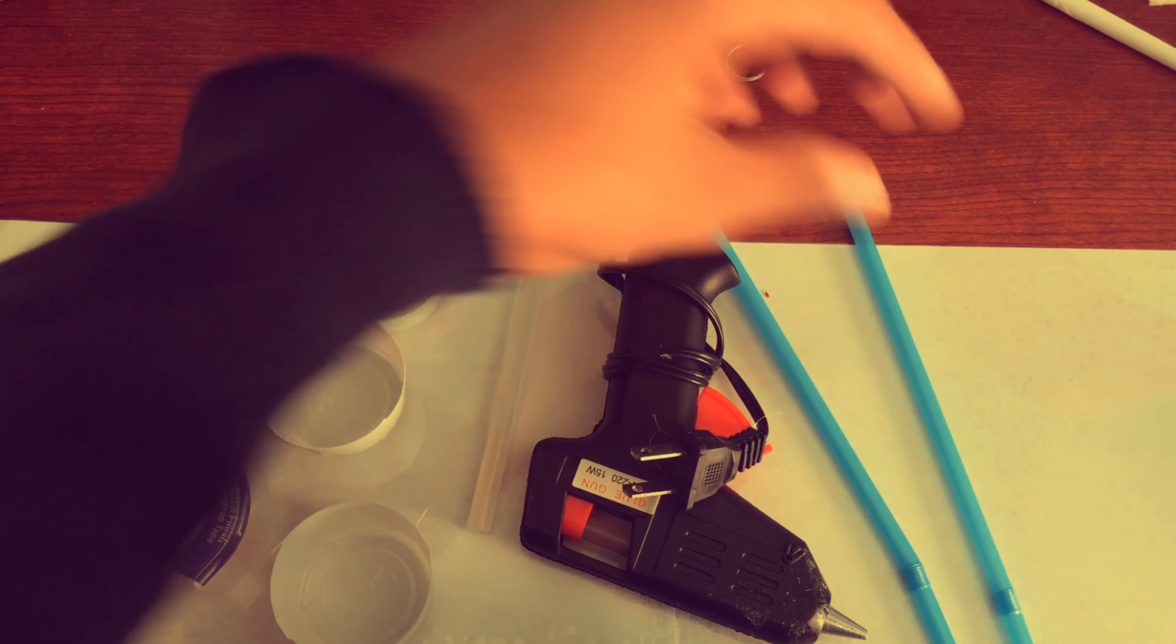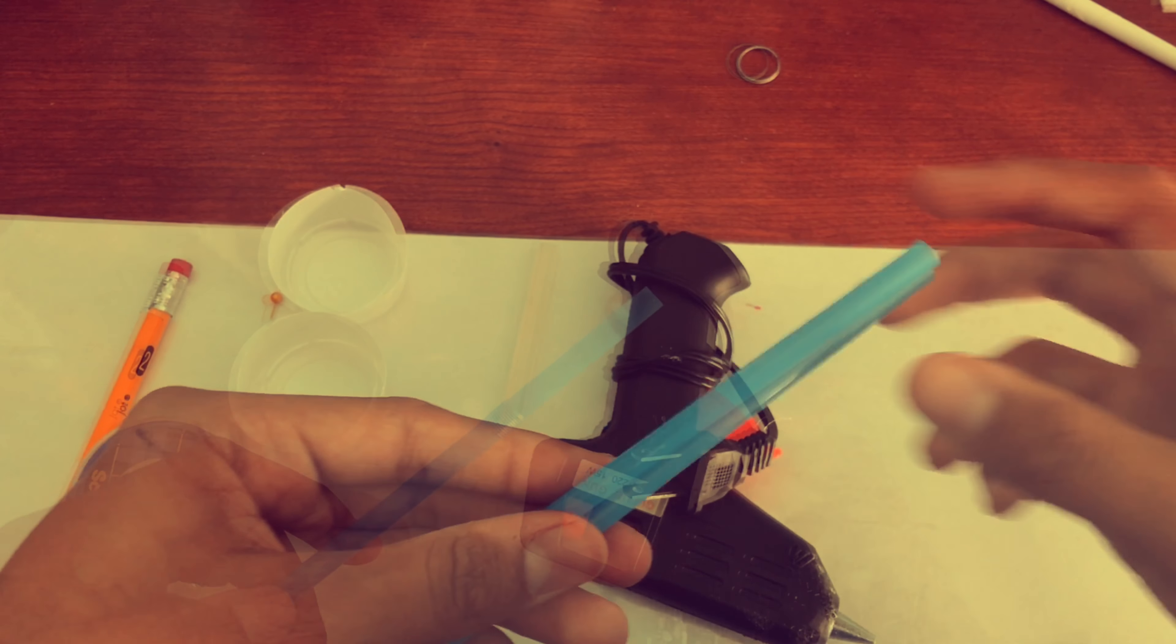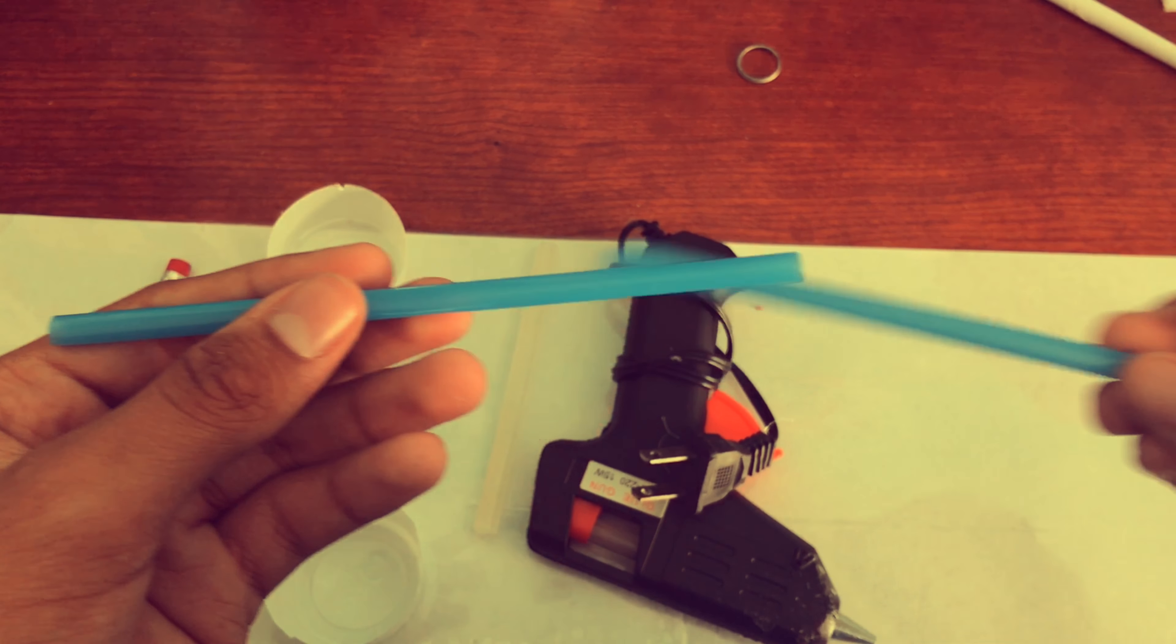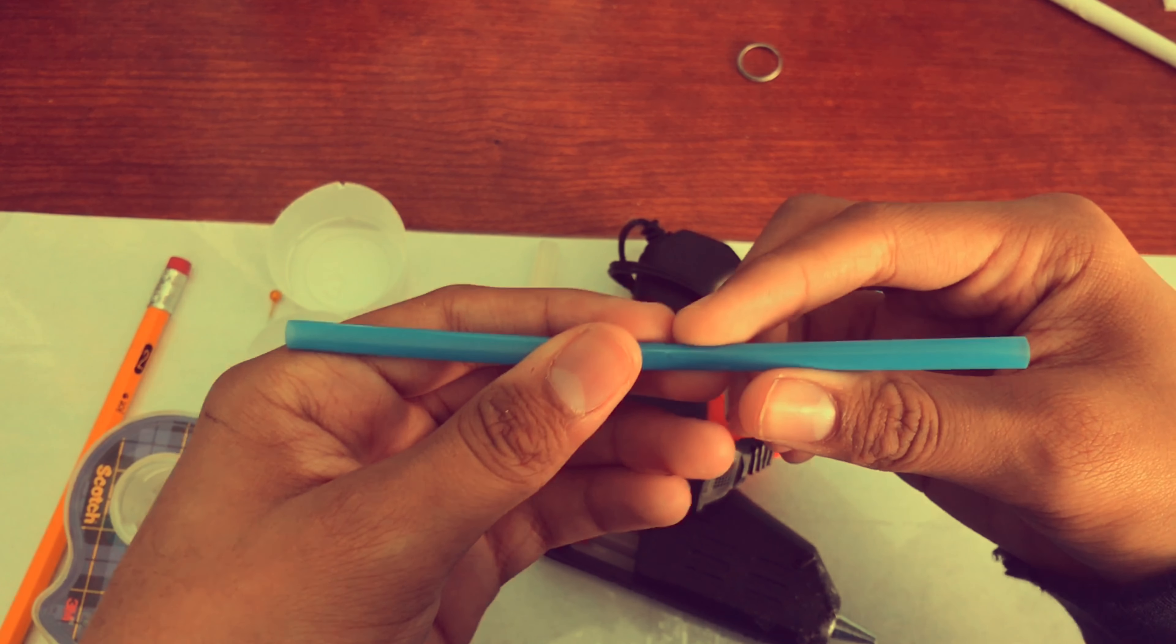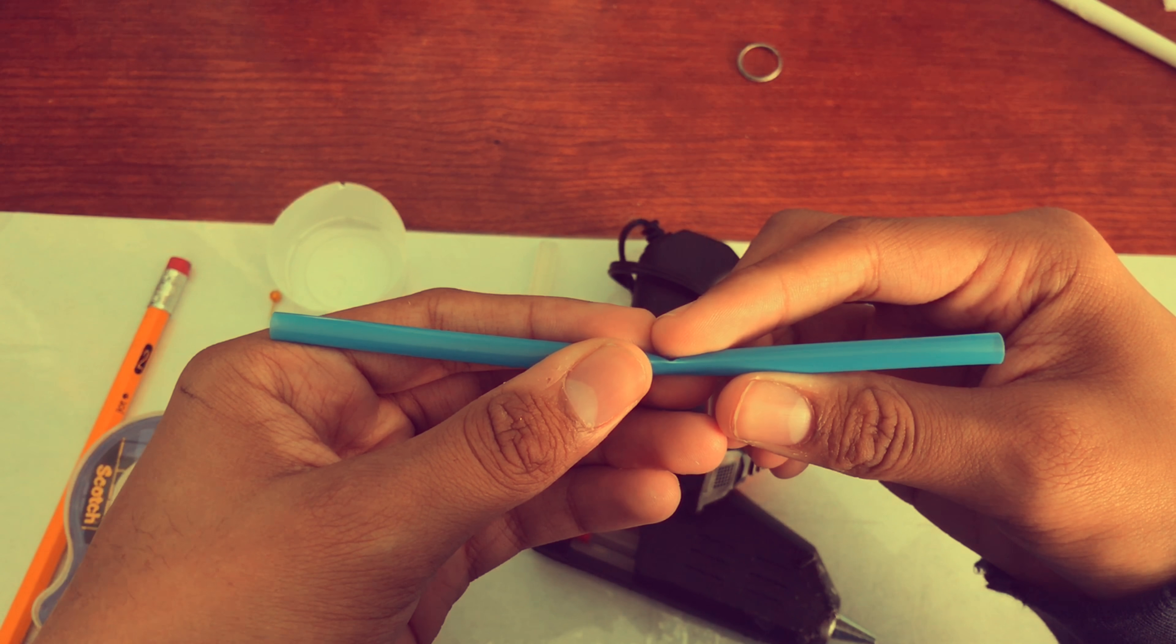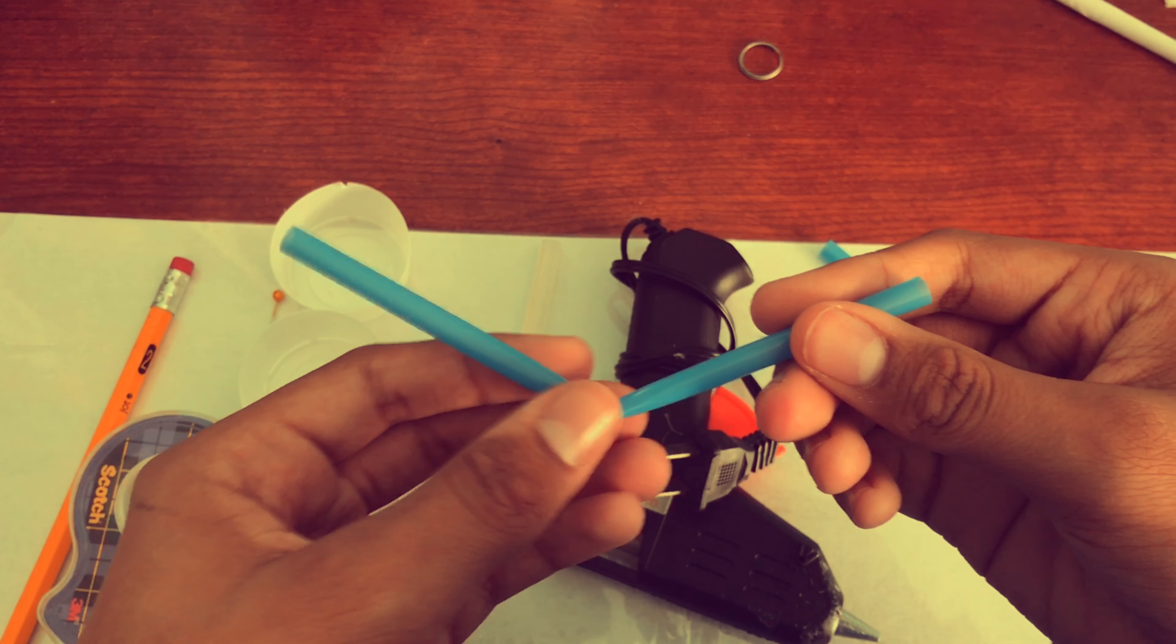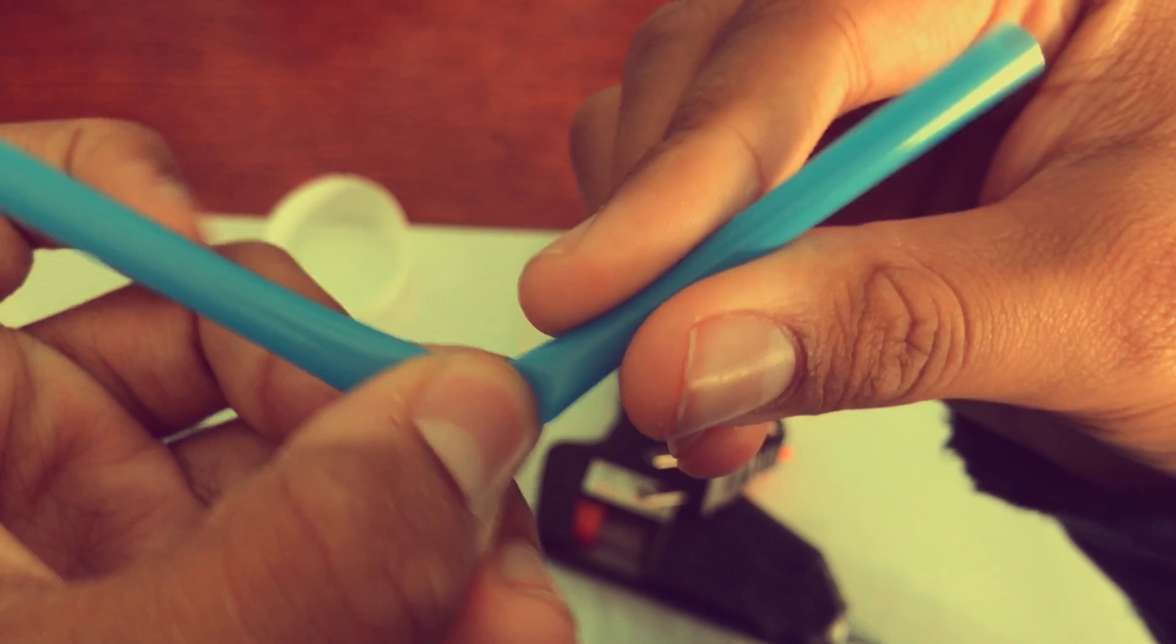So now what you're gonna do is you're gonna take your straws and you're basically gonna cut off the tops of each of them. Alright, so I got the tops of my straws cut off. So now what you're gonna do is you're gonna lay one of the straws down and then basically take one of your straws and basically bend it in half. Okay, so once you got it bent in half like this, you're gonna bend it down like that.